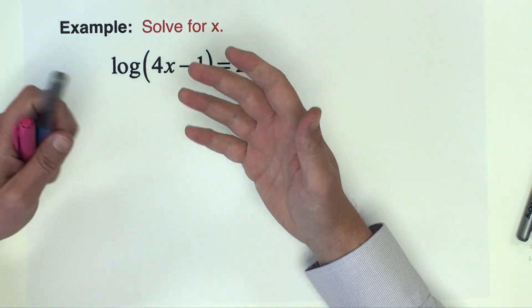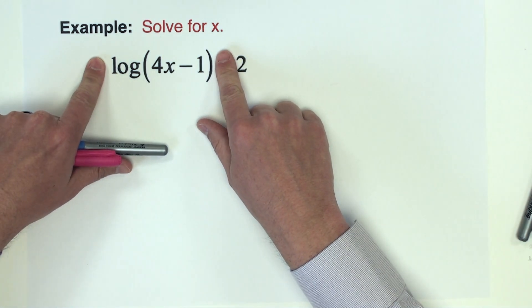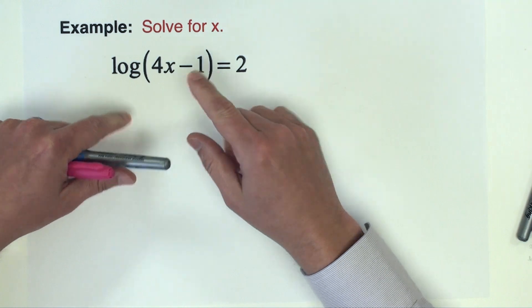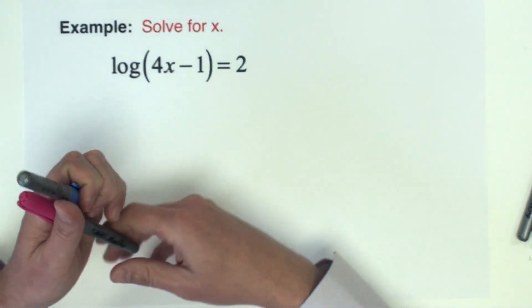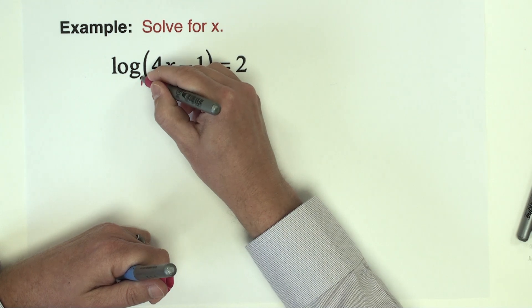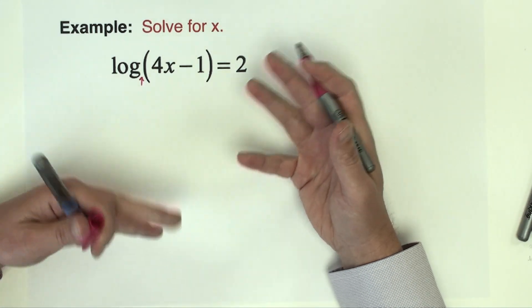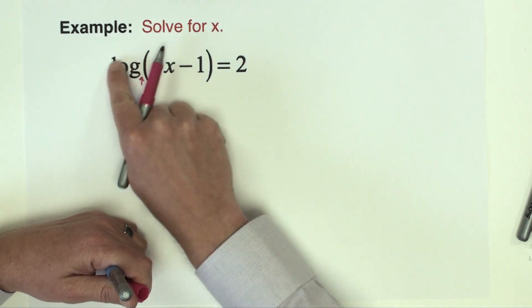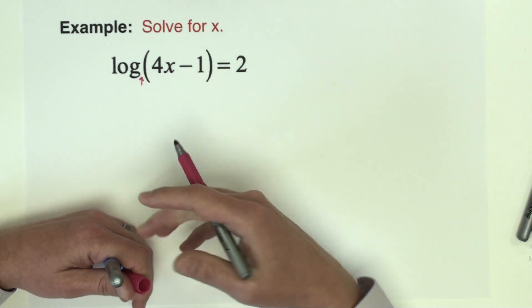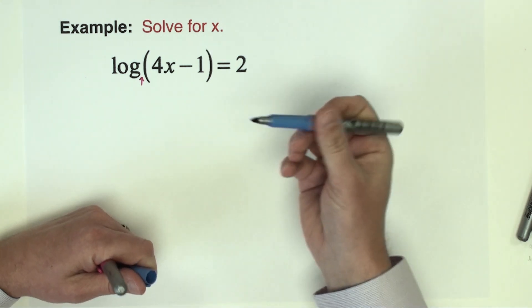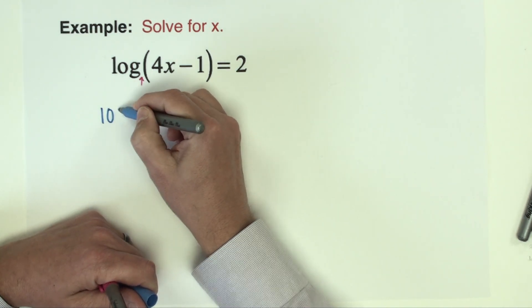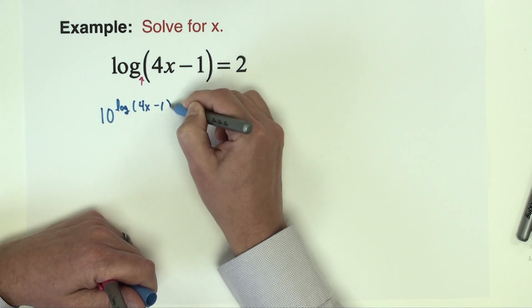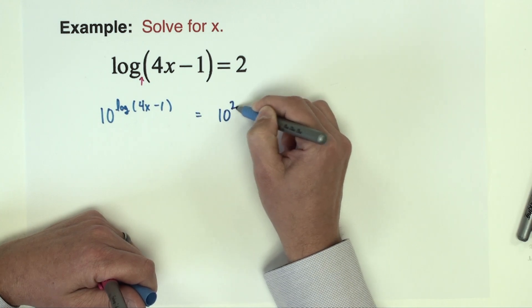Second example, again I'm going to check and make sure that this logarithm is by itself. If it's not I'm going to do that first. This logarithm is by itself on the left hand side so I can go ahead and exponentiate both sides. Now the question is what's the base of this logarithm because we don't see a number there. Remember that if the number is not there then it is implied that this is a base 10 logarithm. So when I exponentiate both sides we're going to do it above a base of 10.